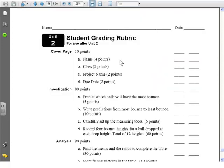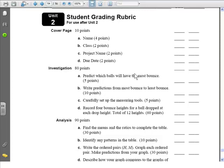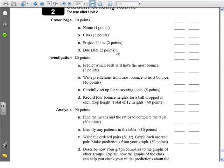On the next page is the student grading rubric. This rubric serves as a checklist for the student. It identifies the required components of the project and the point value of each component.